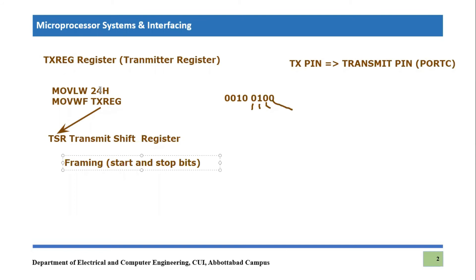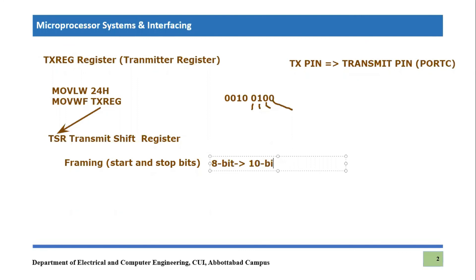So 0x24 was the information we wanted to transmit. We placed it in the working register, and then the value was placed inside the transmit register with the help of the working register. That transmit register will automatically transfer the value into the Transmit Shift Register. The Transmit Shift Register first performs framing and then transmits that information serially. It adds start and stop bits, so the original 8-bit information is converted into 10-bit information, and those bits are transmitted serially from the TX pin, which is part of Port C.